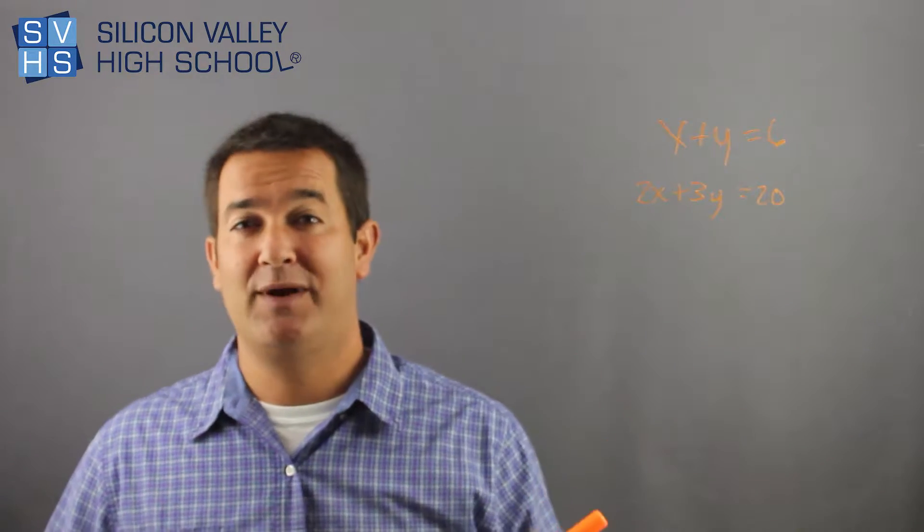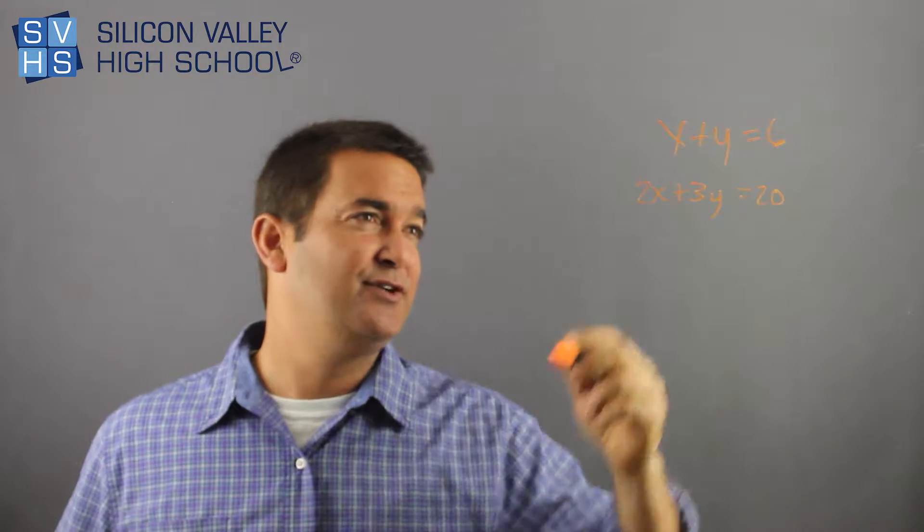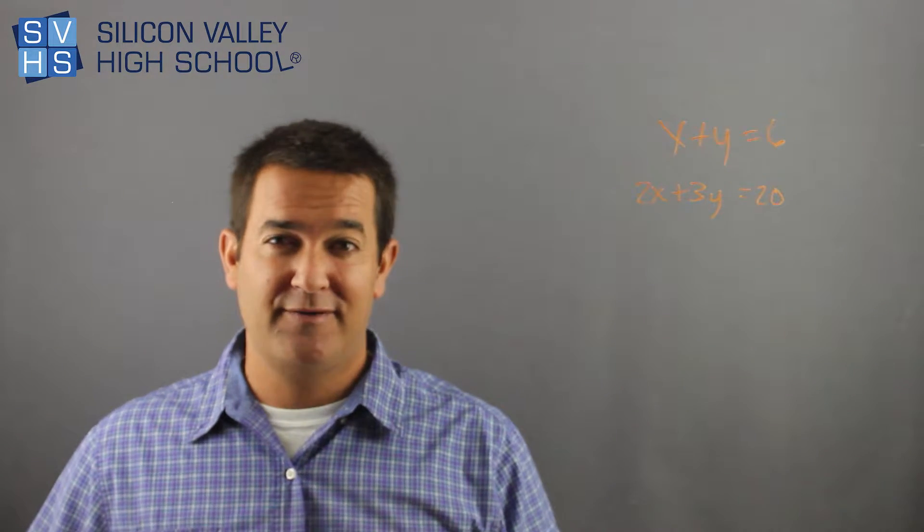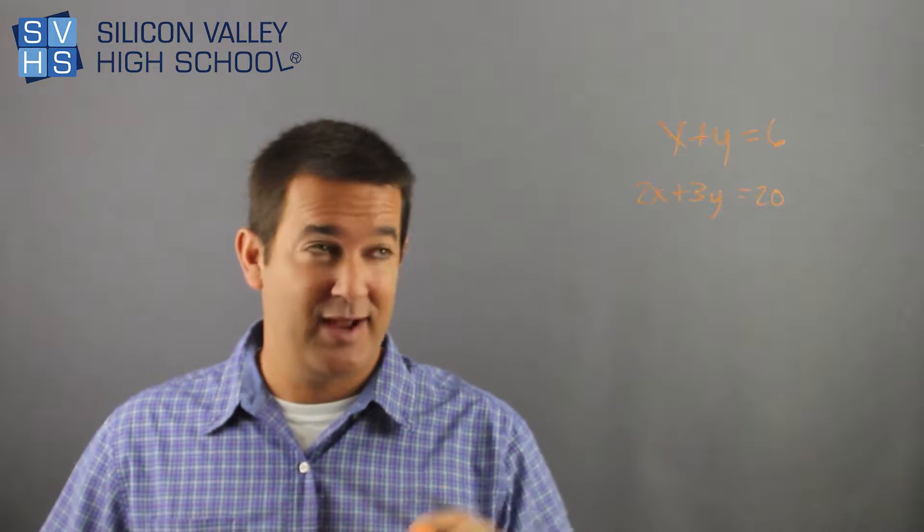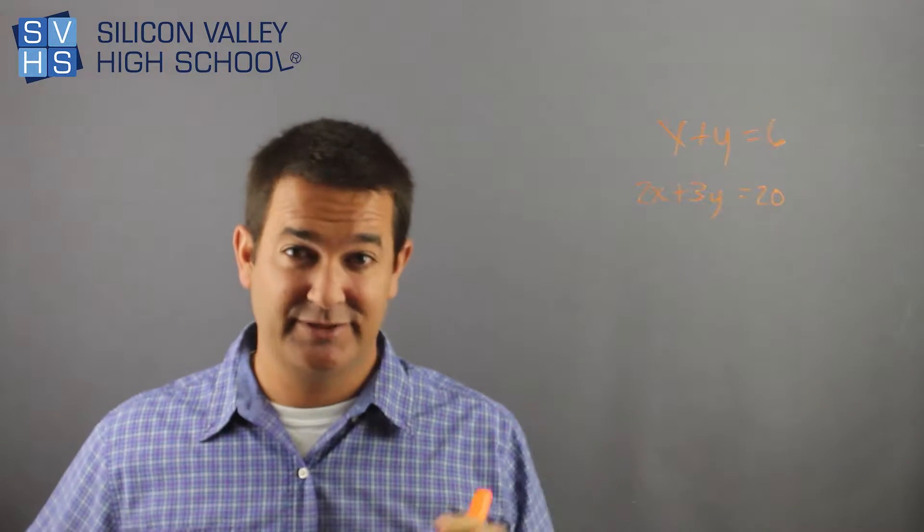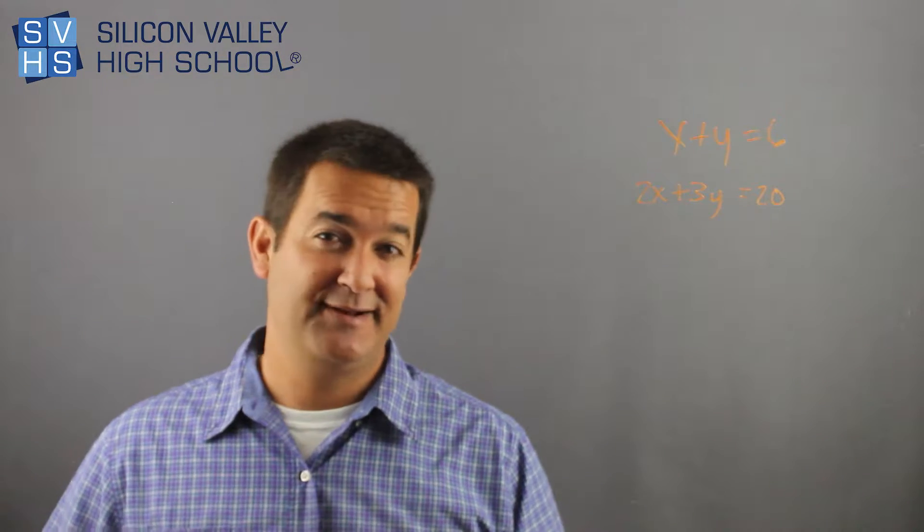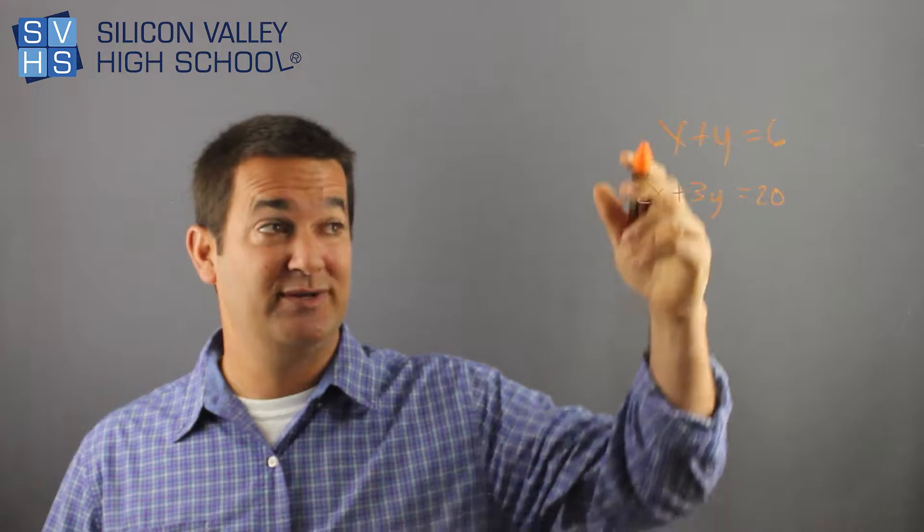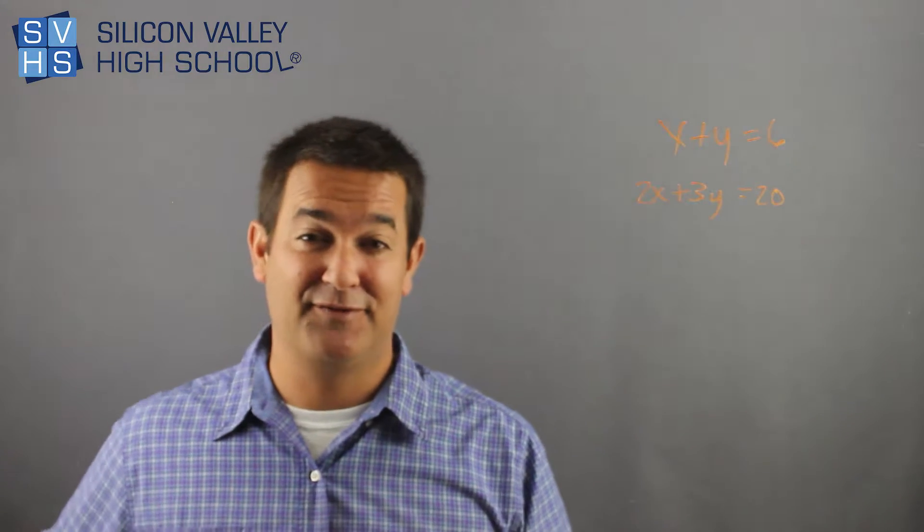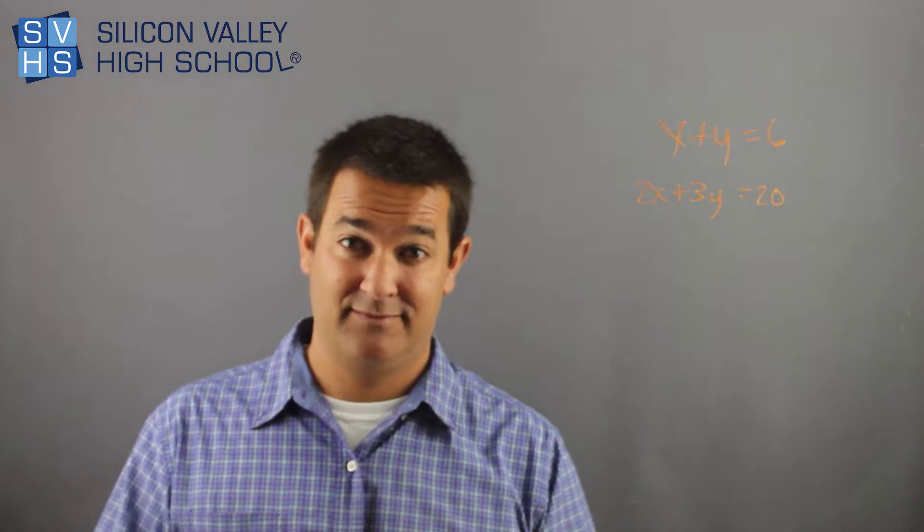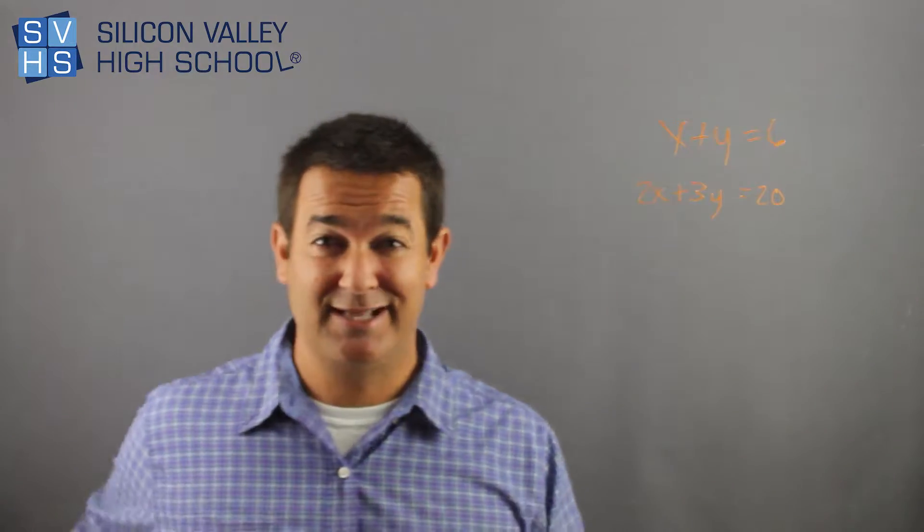First of all, this is a system of equations. There's two equations, and we're solving for two variables. Remember, the number of variables you have, in this case x and y, two variables, you need that many equations to find them. So if you had ten variables, you would need ten equations to solve for those variables. Hopefully that'll never happen in your life.